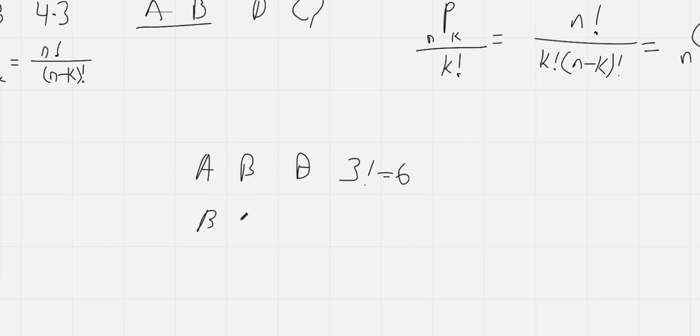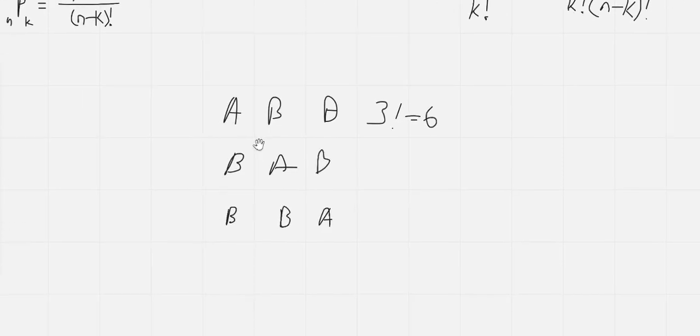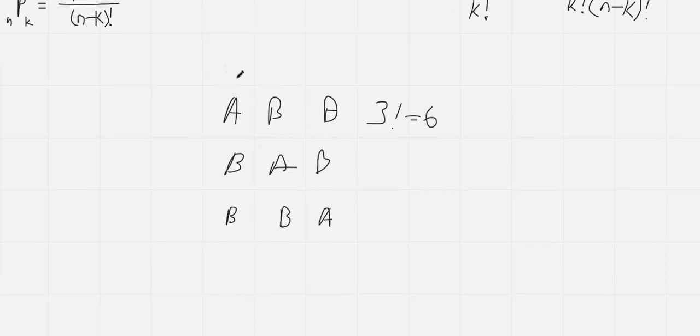Or we could have B, B, A. So there's only three different spellings of the word A, B, B. So what went wrong with our factorial? Well, what went wrong is that this B and this B are the same. So we have to correct for that.